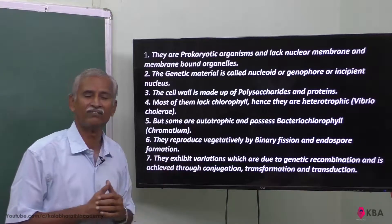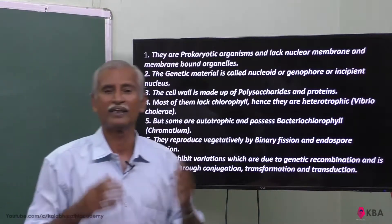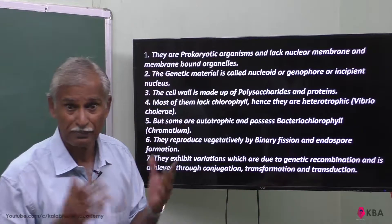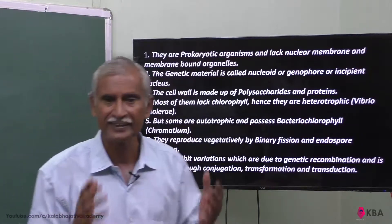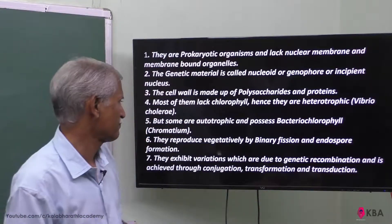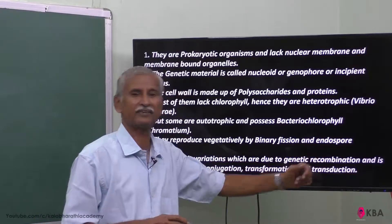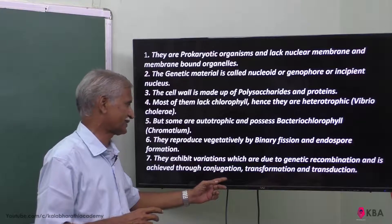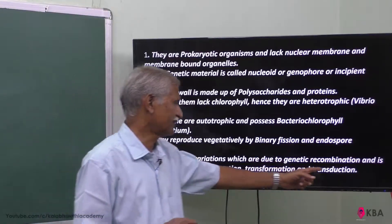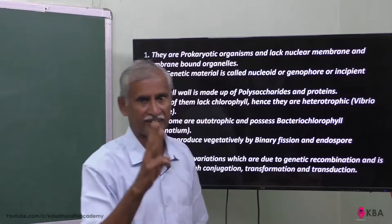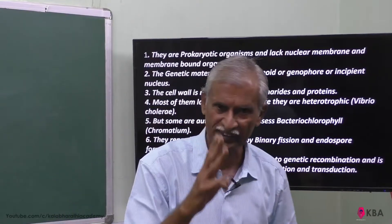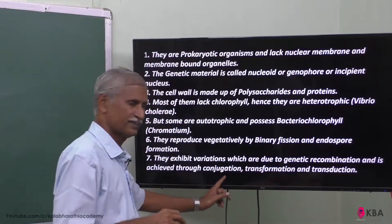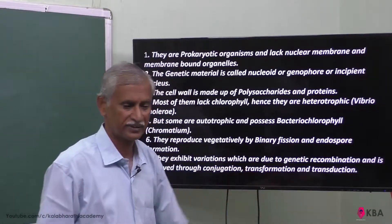In bacteria, there are variations. Not all bacteria are the same type. Variations occur because of changes in DNA. Genetic recombination between two different bacteria is achieved through three processes: conjugation, transformation, and transduction.